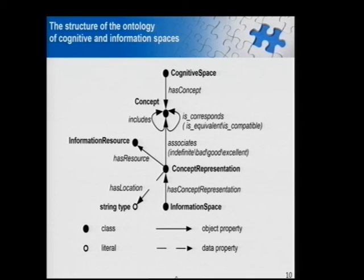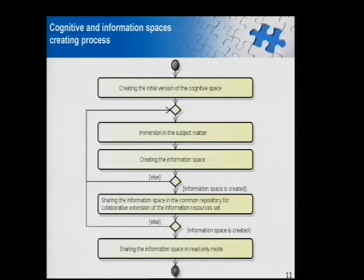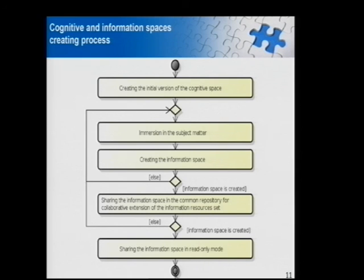The structure of the ontology of cognitive and information spaces is presented here. For formal representation, we propose using ontology described in OWL language. The cognitive information space creation process includes: creating the cognitive space defining concepts and relations between them, associating information resources with domain concepts, and judging their relevance. The resulting information space is relevant to the person's cognitive space.